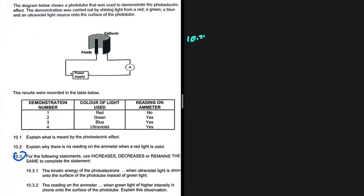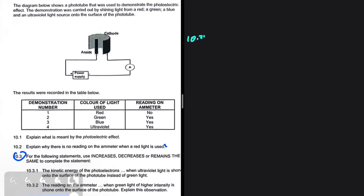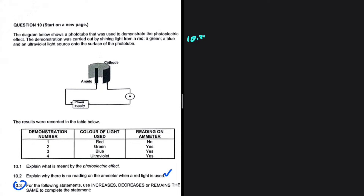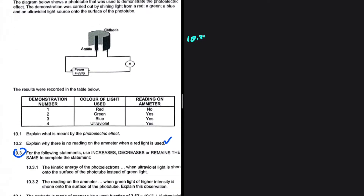For 10.2, we need to explain why there is no reading on the ammeter when red light is used. The diagram shows a photo tube used to demonstrate the photoelectric effect. The demonstration was carried out by shining light from a red, green, blue, and ultraviolet light source onto the surface of the photo tube.